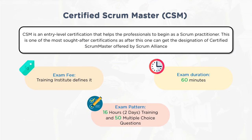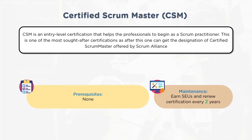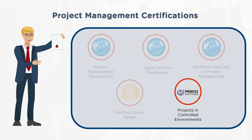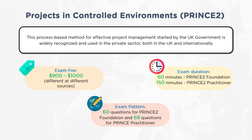Certified Scrum Master (CSM) is an entry-level certification that helps professionals begin as scrum practitioners and is one of the most sought-after certifications, offered by Scrum Alliance. The exam consists of 50 multiple-choice questions after 16 hours (2 days) of training, and the duration is 60 minutes. Credentials must be renewed every 2 years. PRINCE2 is a method popular in the UK, as popular as PMP. Exam fee ranges from $900 to $1,000.